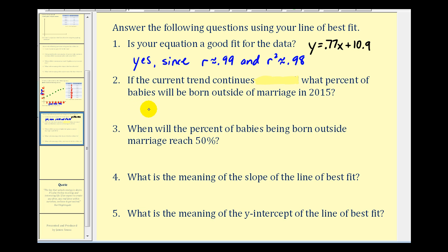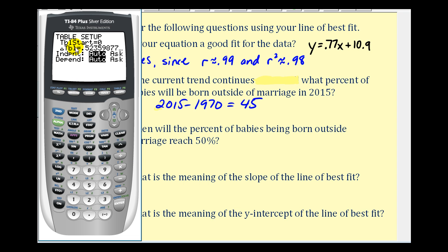Number two, if the current trend continues, what percent of babies will be born outside of marriage in 2015? Well, the year represents an x value, but remember that x is the number of years after 1970. So to determine the value of x for our equation, we'll have to take the given year and subtract our base year of 1970. So our x value is going to be 45. We want to know what the y value would be when x equals 45. Let's go back to our calculator. We're going to press second window. We're going to have our table start at zero. We'll have the change in the table be one, and we'll leave it on automatic. So now if we press second graph, we can scroll down to the x value of 45, and it'll tell us what the corresponding y value would be. So when x equals 45, or in the year 2015, according to this model, 45.7% of the births will be outside of marriage.